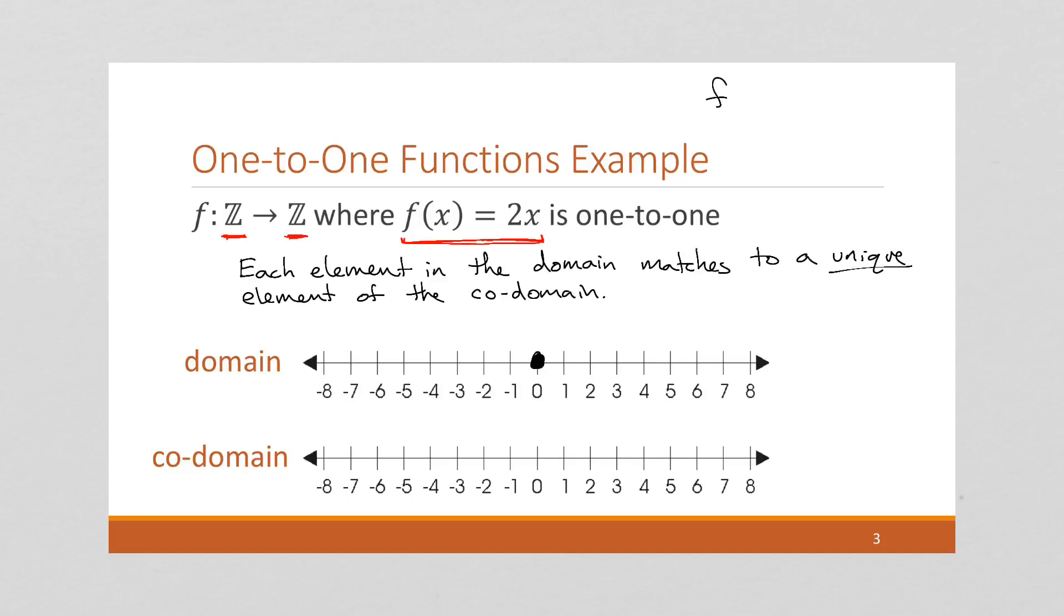Each element in the domain matches to a unique element of the co-domain. Let's start if we have an input in our domain of zero. Now remember, our function is f of x equals 2x. So what is f of zero? Well, f of zero is going to be 2 times zero, which is going to be zero. So that means an input of zero is going to match to an output of zero. Now, what about if we had an input of 1? Well, we can just pop this in. f of 1 is 2 times 1, which is 2.